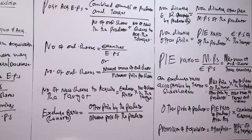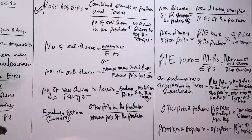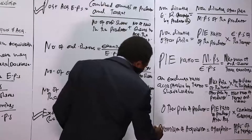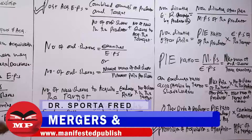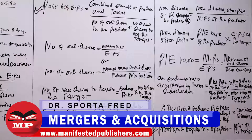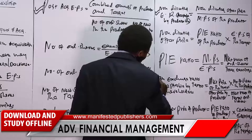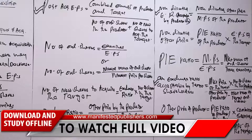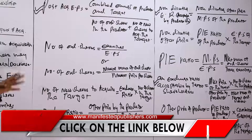These are the main computations we will be doing: post-acquisition earnings per share, the exchange ratio if not given, the non-diluting exchange ratio acceptable by predator shareholders, and the exchange ratio acceptable by target shareholders. The rest are subsidiary calculations. If you remember those main items, you'll be well prepared for what is expected.